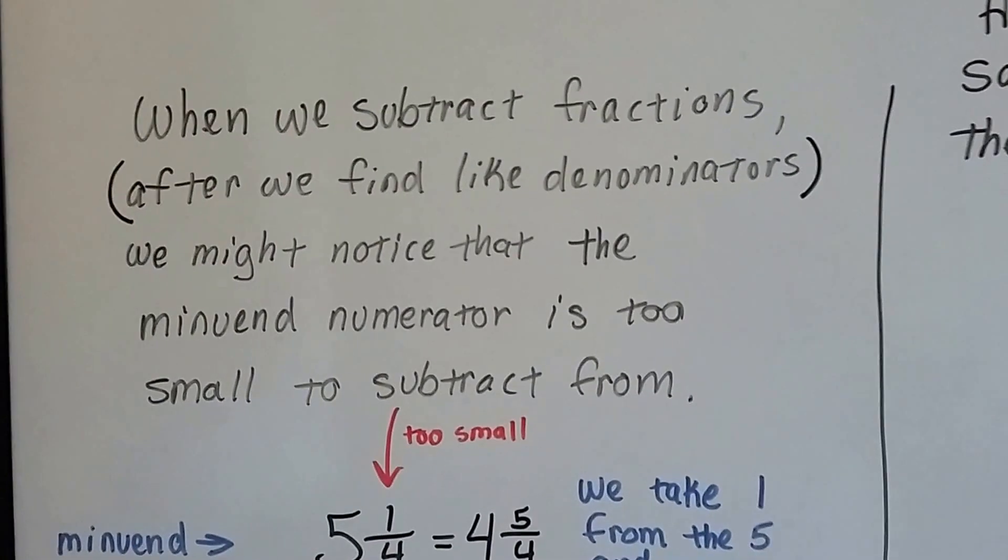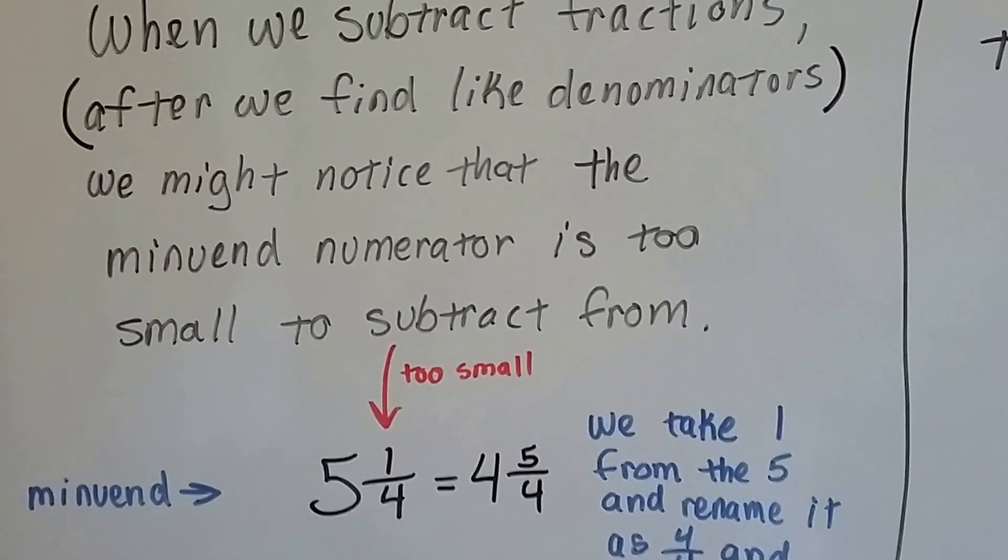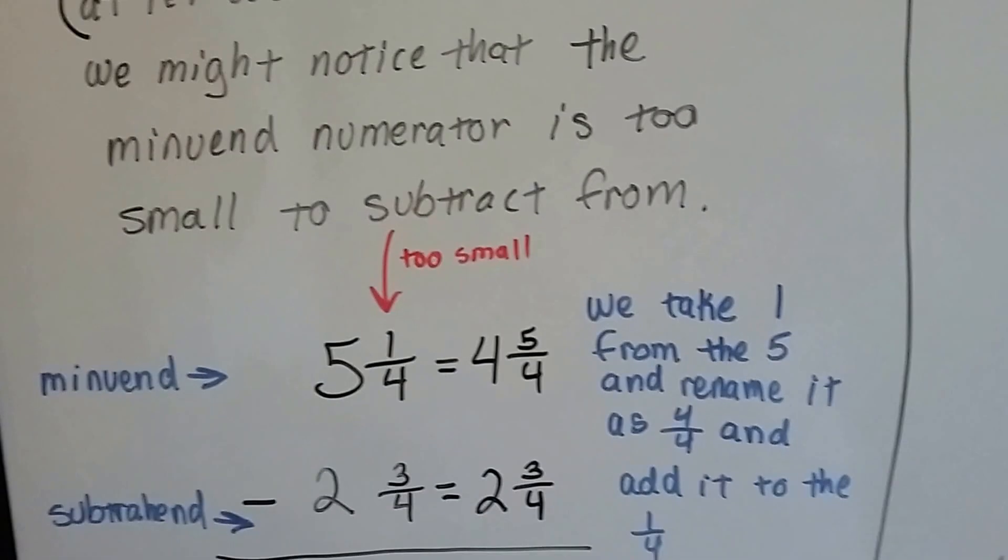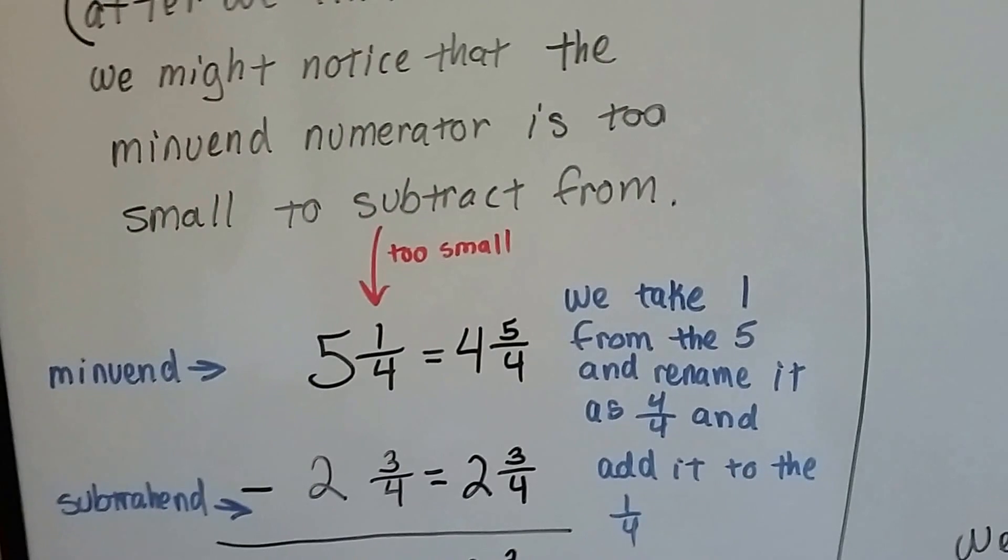When we subtract fractions after we find like denominators, we might notice that the minuend numerator is too small to subtract from. The minuend is this big number that we're trying to subtract from.